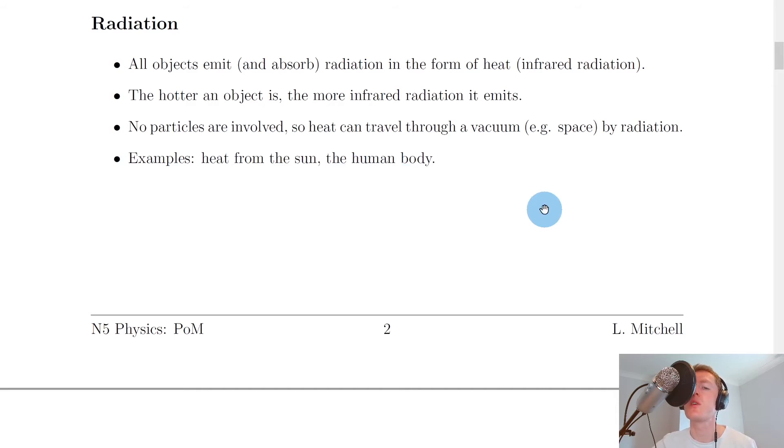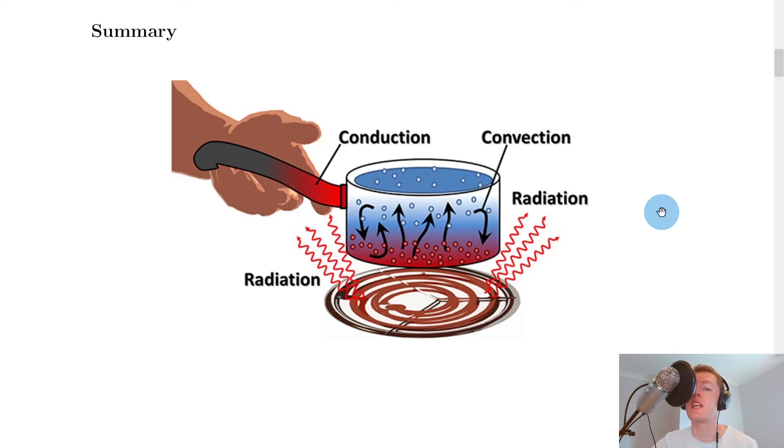Now just to summarize, this picture here gives a good example of where all three methods of heat transfer can be applied to the same situation. Imagine you're heating a pot of water on a hob or the cooker, and the pot itself is in contact with the hob.